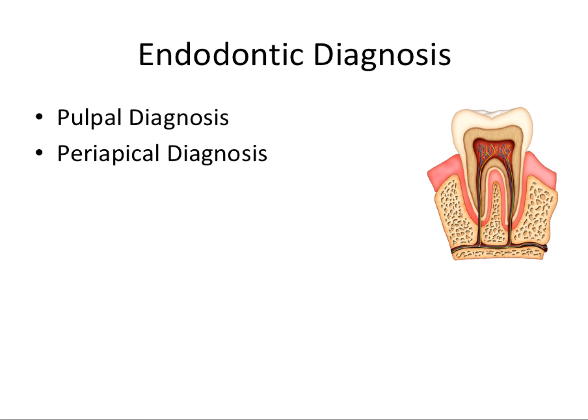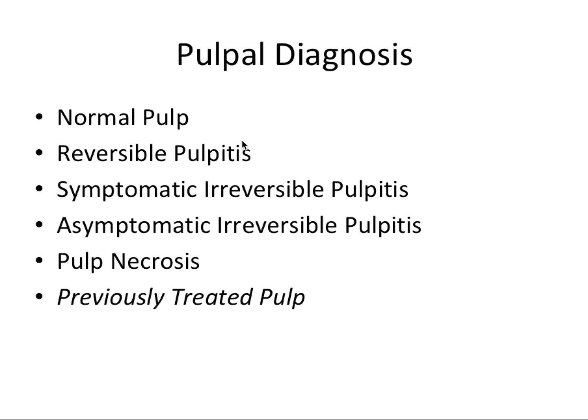Every single tooth, whether dead or alive, has two endodontic diagnoses: a pulpal diagnosis and a periapical diagnosis, sometimes just referred to as an apical diagnosis. These concern the health of the pulp and the health of the tissues around the apex of the tooth respectively. We'll talk about the key points to know for each of these diagnoses, and we'll start with the pulpal ones.